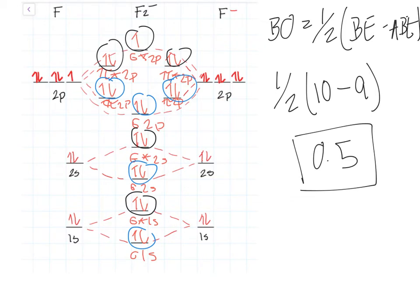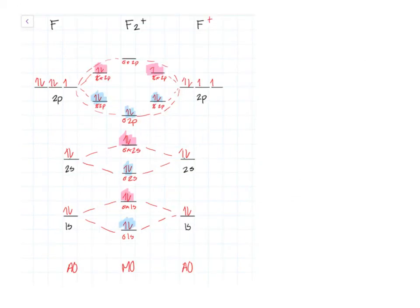Now I'm going to use this diagram for F2 plus. Here's the molecular orbital diagram for F2 plus. It's going to be the same thing as F2 minus, but except there's going to be two electrons missing. Again, here is the sigma 1s and then sigma star 1s and so on.